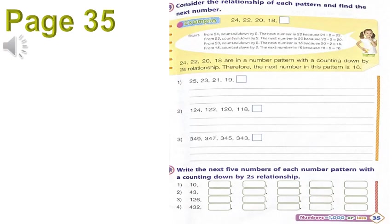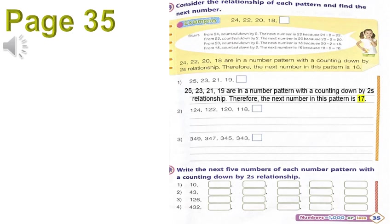Page 35, number one: consider the relationship of each pattern and find the next number. For example, number one: twenty-five, twenty-three, twenty-one, nineteen — as you see, they are all decreased by twos. Please write in sentence: twenty-five, twenty-three, twenty-one, and nineteen are in a number pattern with a counting down by twos relationship.